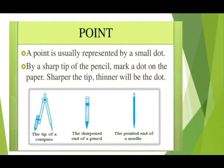A point is usually represented by a small dot made by the sharp tip of a pencil. Mark a dot on the paper — the sharper the tip, the thinner the dot will be.